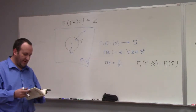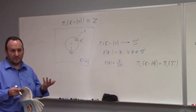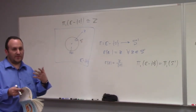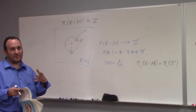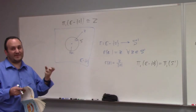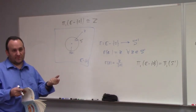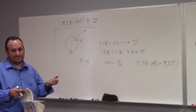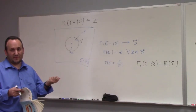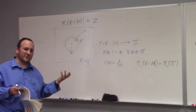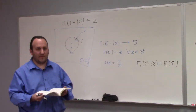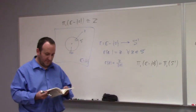A contractible space is one which is homotopic to a point — equivalently, it can be retracted to a point. The fundamental group of a point is zero. So the fundamental group of a contractible space is zero. Of course, you can also prove directly that every loop is homotopic to the constant path; that's the other way to look at it.